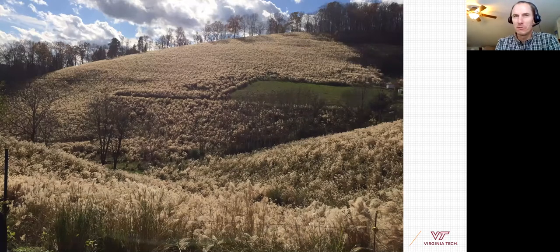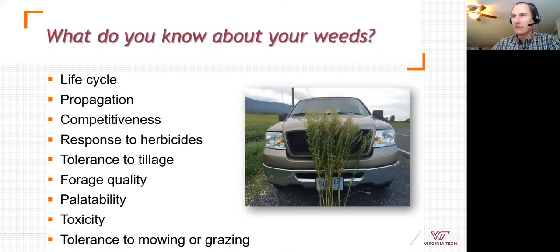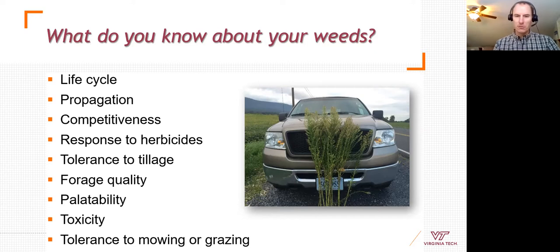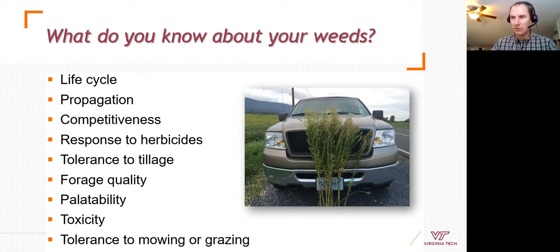If you're just going to hand-pull a weed, identification may not be strictly necessary. But identifying it really helps you manage it effectively. It's a key prerequisite: knowing the weed tells you its life cycle — is it an annual that reproduces by seed each year, or a perennial with underground structures you need to starve out, dig out, or kill? And how does it propagate? Perennials that spread by rhizomes require very different management.